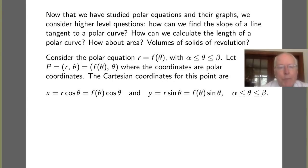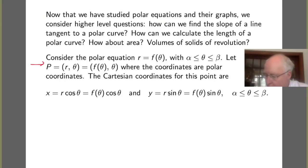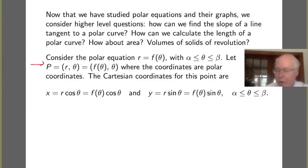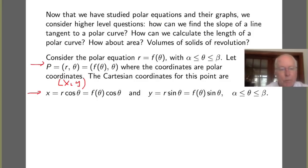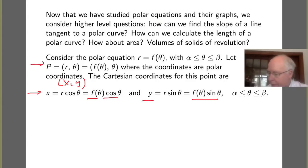The basis for our work here is this. Suppose we have a polar equation R equals f of theta, say for theta running between alpha and beta. If we have a point P with coordinates R, theta on this graph, then the R coordinate must be f of theta. Now, as we saw in an earlier video, it's easy to find the Cartesian coordinates for a point if we have the polar coordinates. Those are found by calculating x equals R cosine theta. Remember the R here is f of theta, so x is f of theta cosine theta, and likewise y is f of theta sine theta.